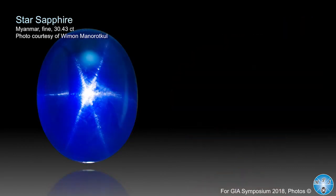Star sapphire — the king of stars — blue, blue. Transparent to translucent quality, also from Burma. You find star sapphires in about 24 different countries, from Afghanistan to Zimbabwe, A to Z. Of course the most beautiful ones are from Burma and from Sri Lanka; you have some from Madagascar, and other countries too, though not always of commercial quality.